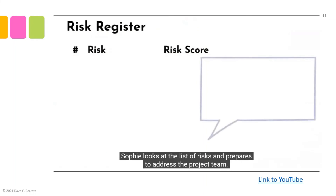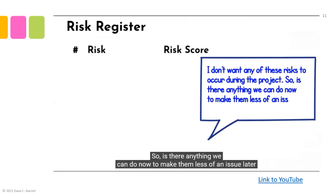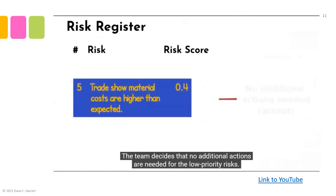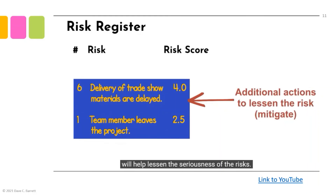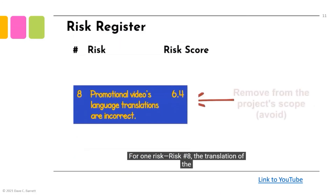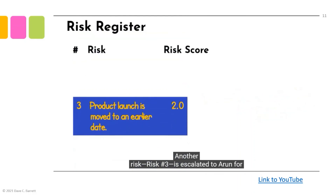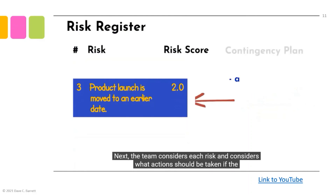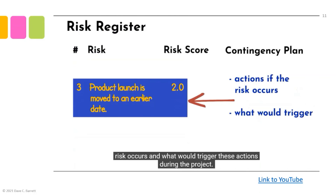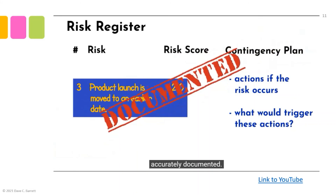Sophie looks at the list of risks and asks the team if there is anything they can do now to make the risks less of an issue later. The team decides no additional actions are needed for low priority risks. For others, they list additional actions to lessen the seriousness of each risk. For risk number eight — translation of the promotional video to other languages — they decide the risk is too high and recommend removing that requirement from the project scope. Risk number three is escalated for discussion with the senior management team. The team then considers what actions should be taken if each risk occurs and what would trigger those actions, with Sophie documenting everything accurately.